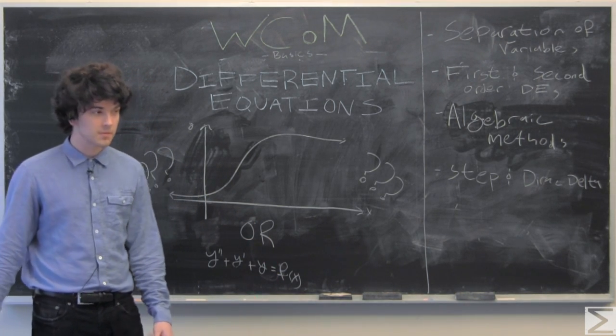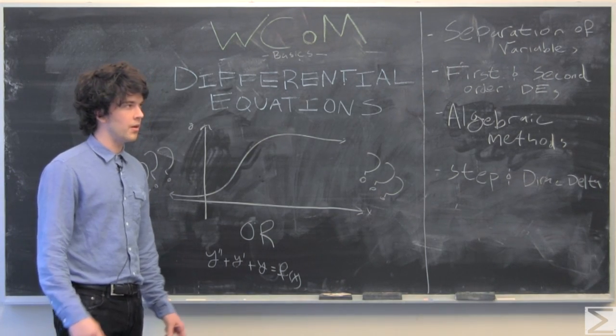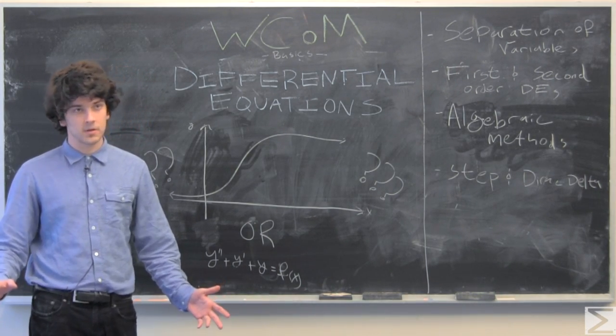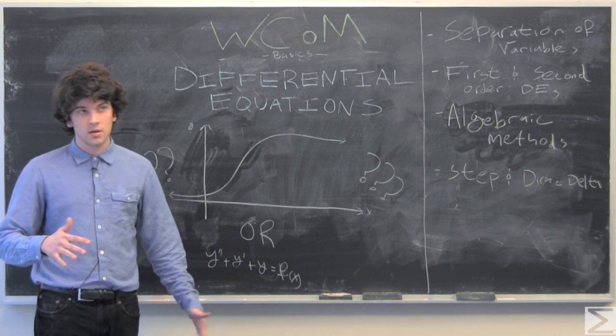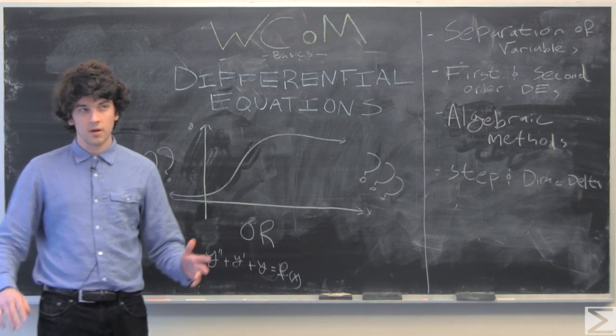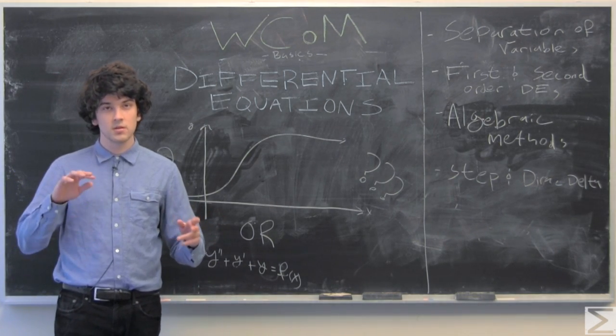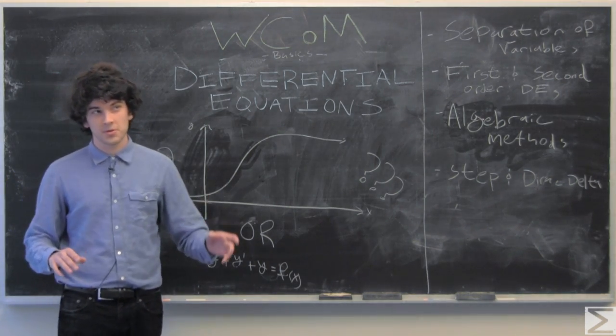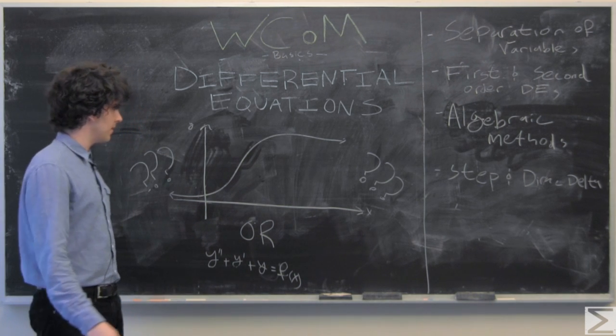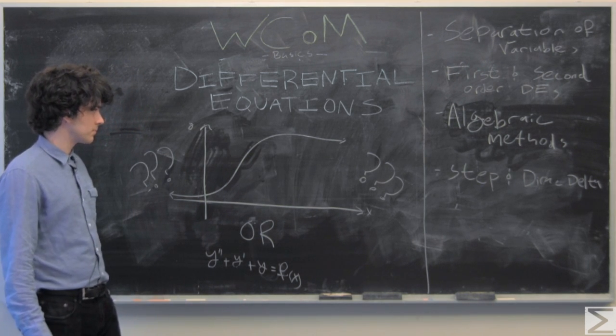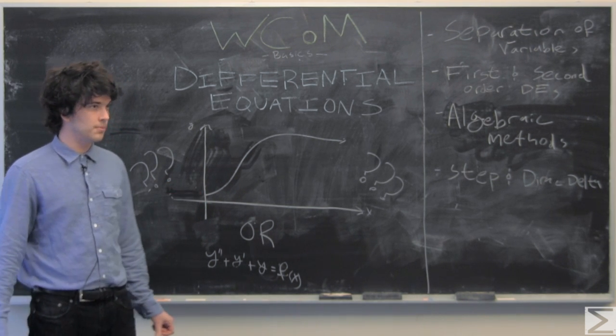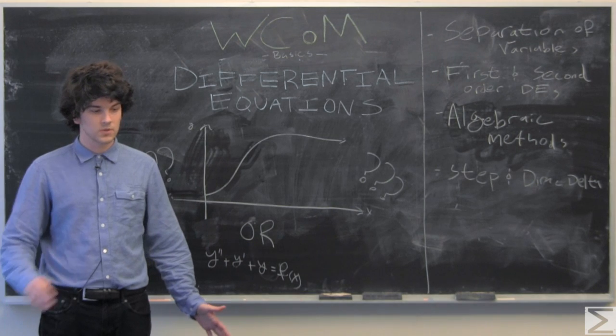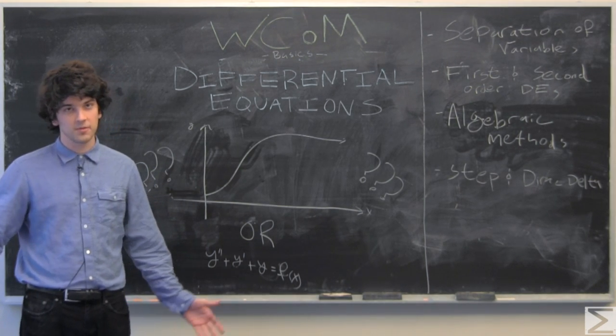Where you have a bunch of data and it seems to be following some curve where the rate of change of the function, of the output of the function, is equal to or proportional to the input of the function.